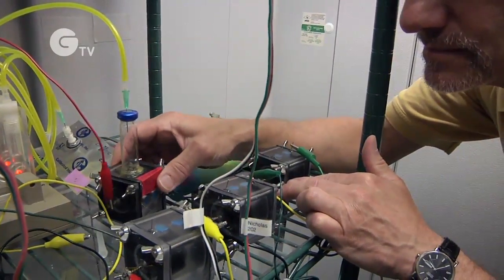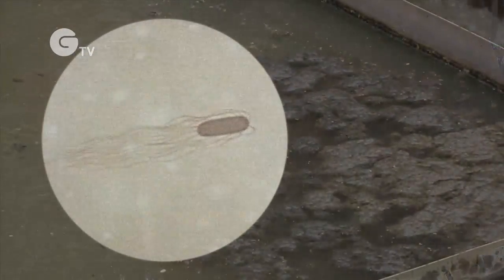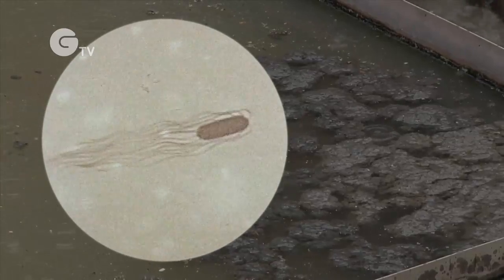We're using bacteria to actually turn any organic matter and some inorganic matter directly into electricity. The bacteria do it themselves. And that's how we're running this fan. Some treatment plants already use bacteria to break down the organic waste in the water.